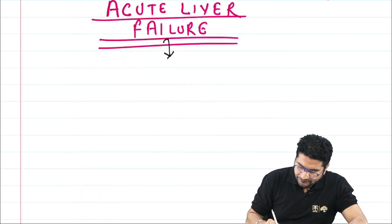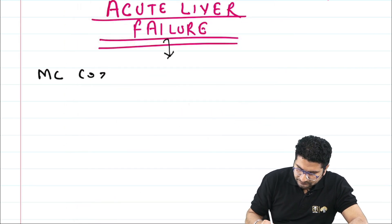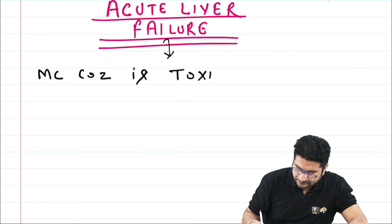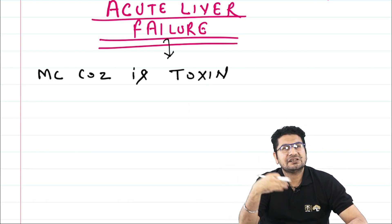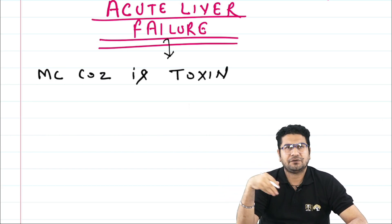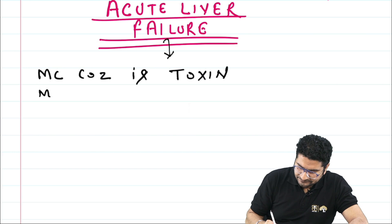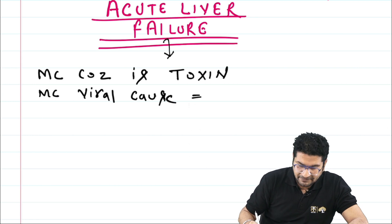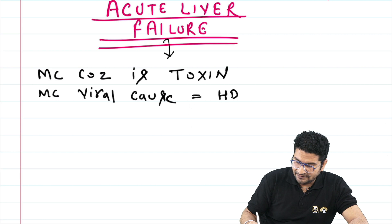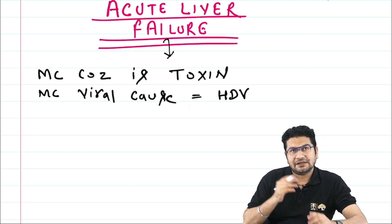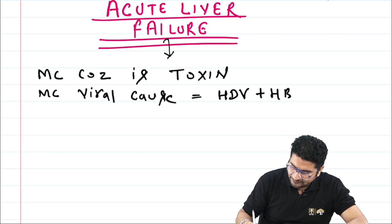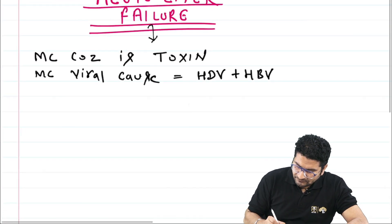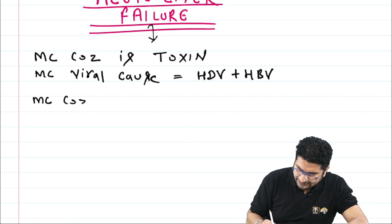The most common cause of acute liver failure is toxins — not any virus. Many patients accidentally or intentionally ingest some kind of toxin, such as in suicidal attempts. If we talk about the most common viral cause, it is hepatitis D virus in combination with hepatitis B virus — HDV plus HBV infection is more common.